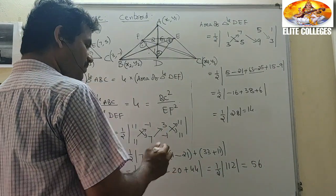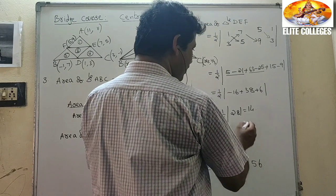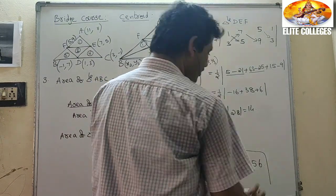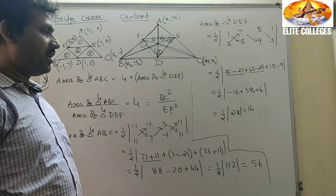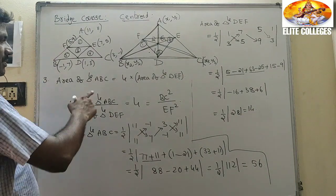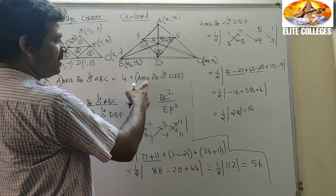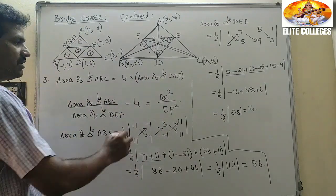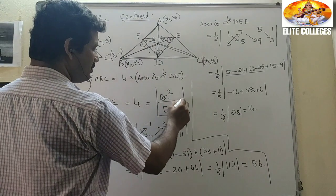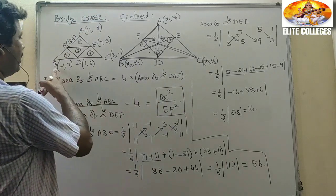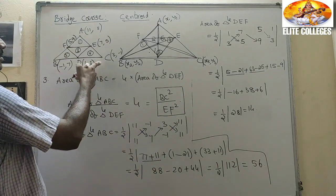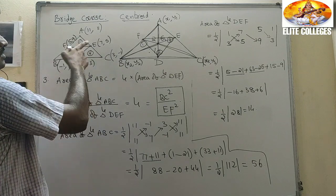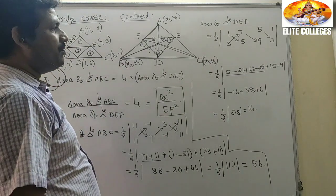So what is the relation between them? 56 is indeed four times 14. So area of triangle ABC equals 4 times area of triangle DEF. This verifies the relation, and you can also observe the same with BC² / EF².